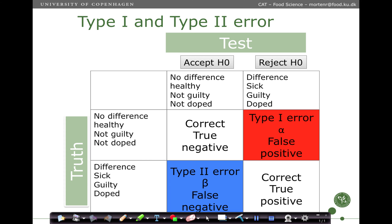So the power of this trial is too low, resulting in a non-significant p-value. We have two types of errors: the type 1 error, where we reject the null hypothesis when there is indeed no difference, and the type 2 error, where we accept the null hypothesis when there is indeed a difference. These are the false positive and false negative errors.